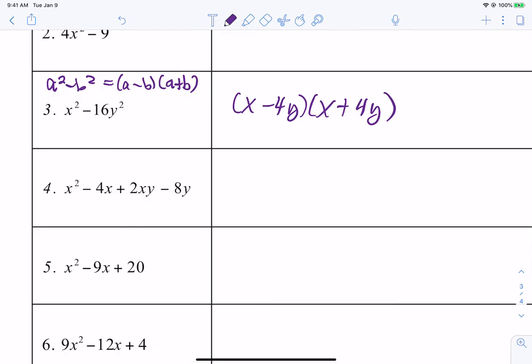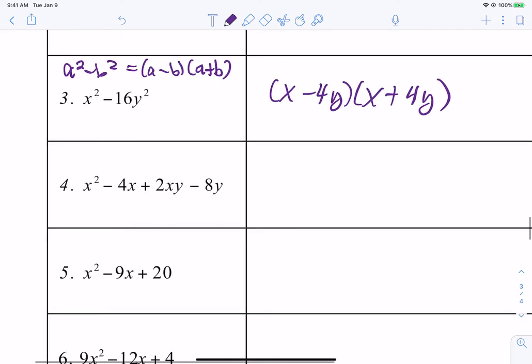Now, I would like to do number four with you. Number four is an example of a what we call grouping problem. Now, the reason I think it's a grouping problem is if you count the terms, we've got one, two, three, four terms. Now, there's no greatest common factor. These two both have an X and these two both have a Y. But those aren't greatest common factors throughout the entire problem. So we can't take out a greatest common factor. But that's something you should always look at. Now, what grouping does is it groups the first two terms together and the last two terms together. And we only focus at two at a time and we remove the greatest common factor for those pieces.